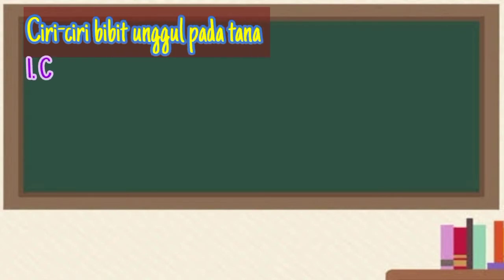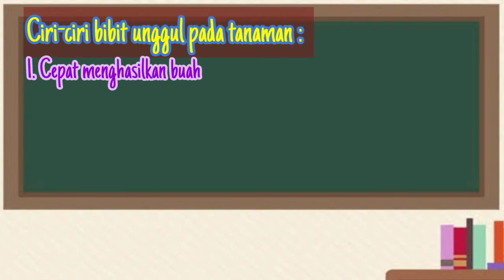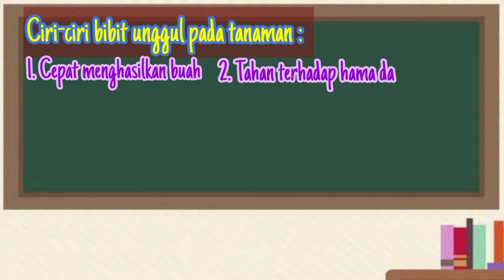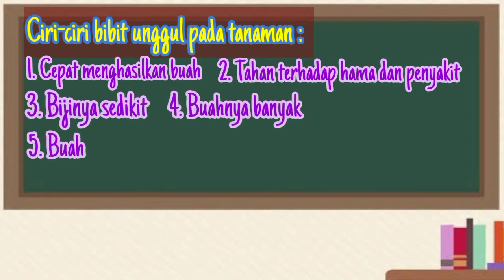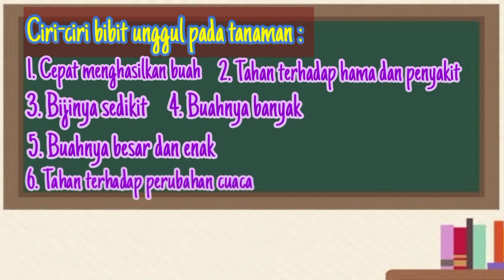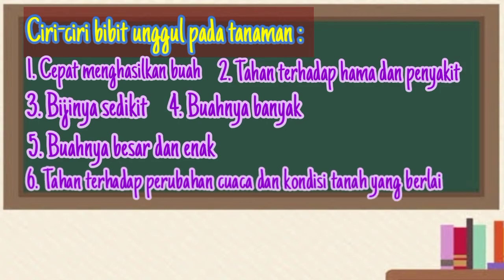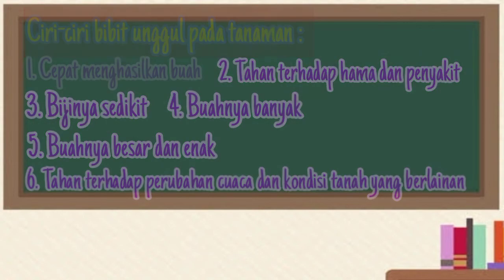Ciri-ciri bibit unggul pada tanaman antara lain: cepat menghasilkan buah, tahan terhadap hama dan penyakit, bijinya sedikit, buahnya banyak, buahnya besar dan enak, serta tahan terhadap perubahan cuaca dan kondisi tanah yang berlainan.